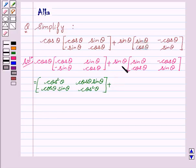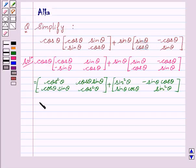Plus, on multiplying sin θ with the given matrix, we get sin²θ, minus sin θ cos θ, sin θ cos θ, and sin²θ. This is equal to cos²θ plus sin²θ, cos θ sin θ minus sin θ cos θ.